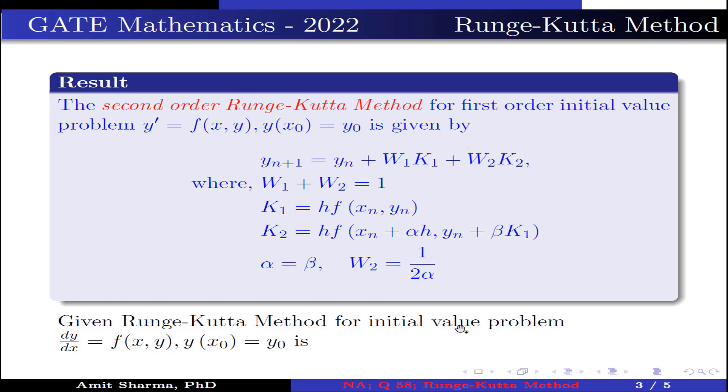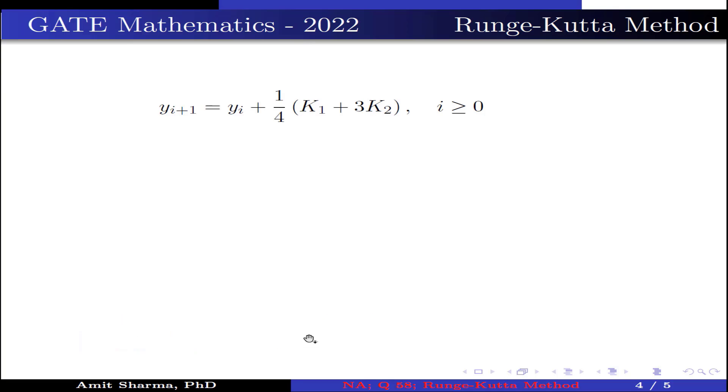Now given Runge-Kutta method for initial value problem dy/dx = f(x,y), y(x0) = y0 is yi+1 = yi + 1/4(k1 + 3k2), where i ≥ 0.